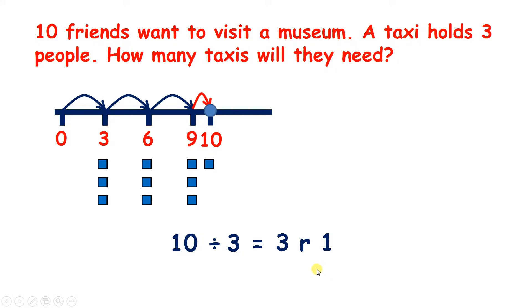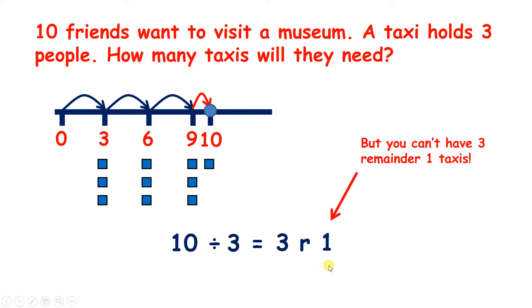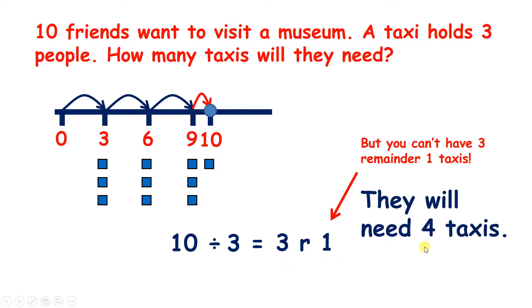But this can't be our answer, because we can't have three remainder one taxis. They will need four taxis, because the first three taxis can hold three friends each, but then they need a fourth taxi for the tenth person.